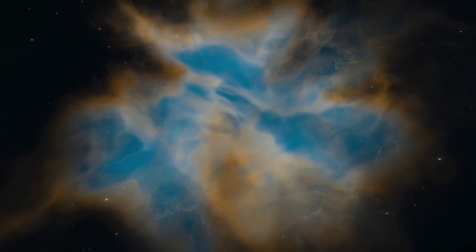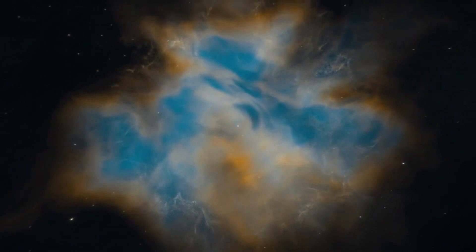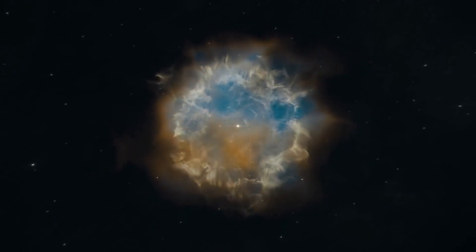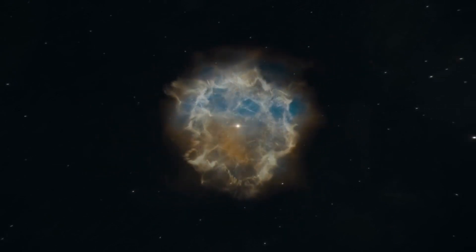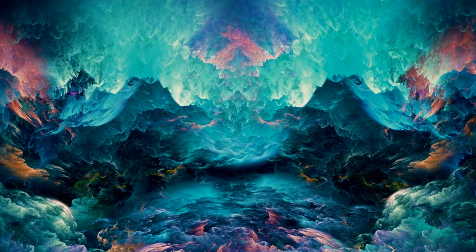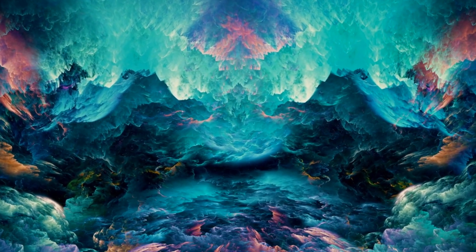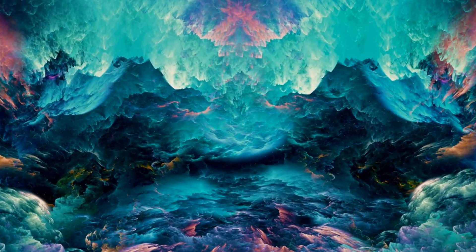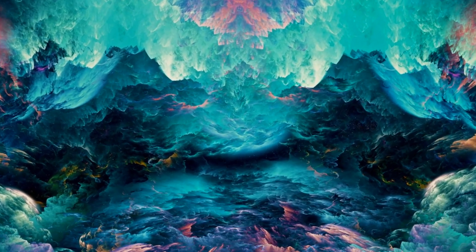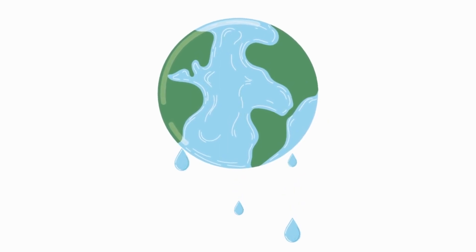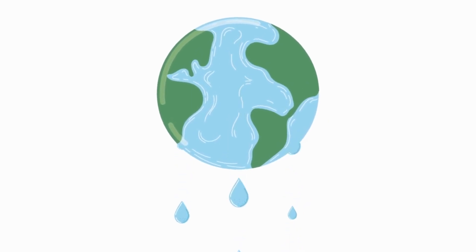Formation from solar nebula. About 4.6 billion years ago, our solar system formed from a rotating disk of gas and dust called the solar nebula. As the solar nebula cooled, water vapor condensed and formed ice particles, which eventually coalesced to create planetesimals. Some of these planetesimals, including Earth, had enough mass and gravity to retain water.